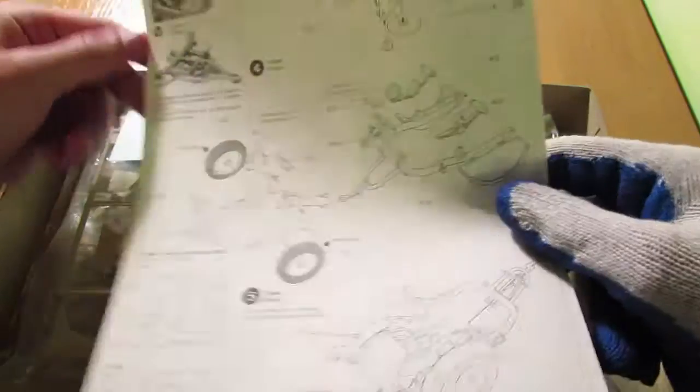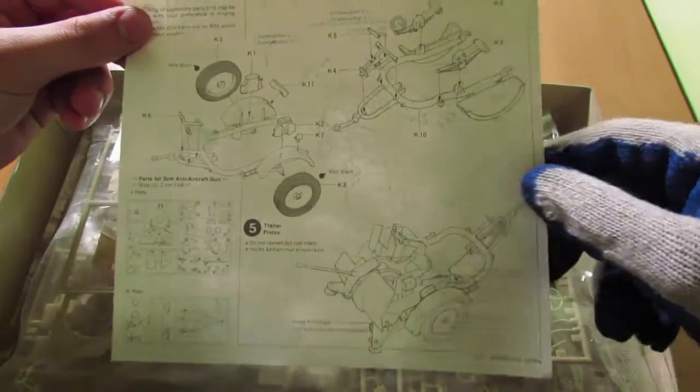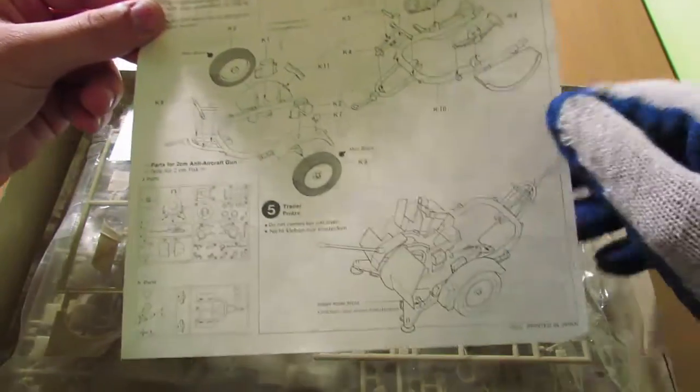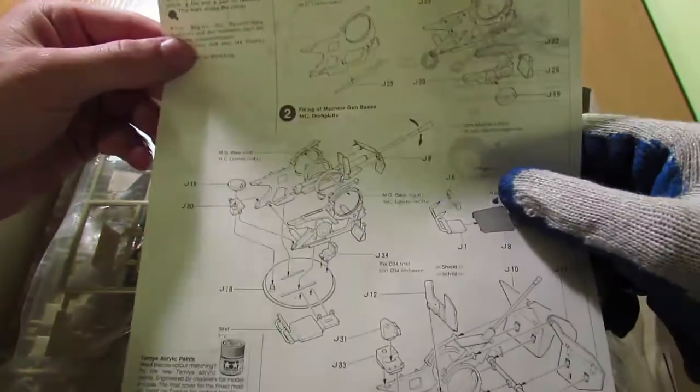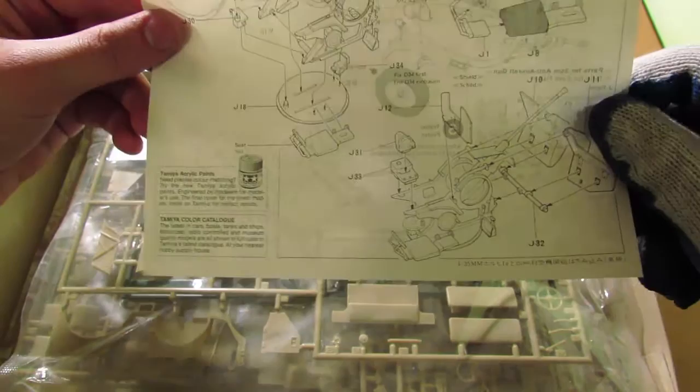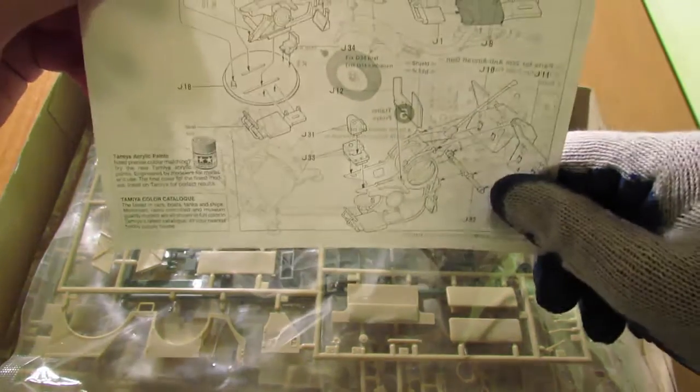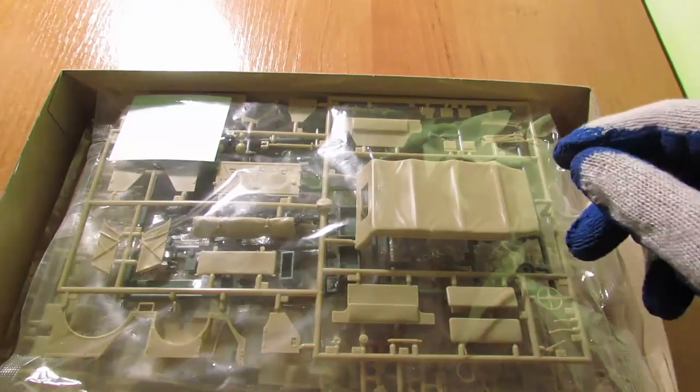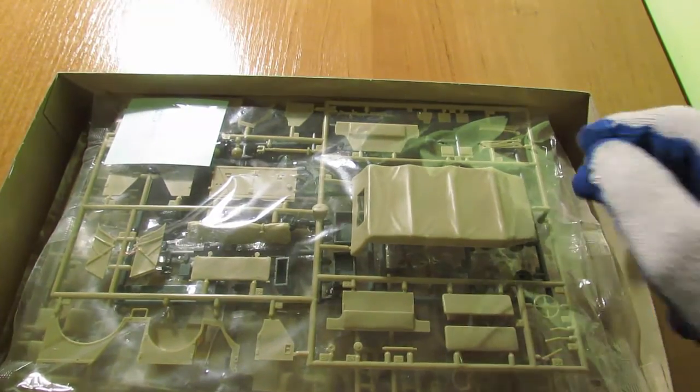Mam jeszcze jedną instrukcję. Jest to instrukcja do złożenia działka przeciwlotniczego z całym podwodziem, tym wozidełkiem. Proszę bardzo. Żebyście tu jakieś odpowiedzi mamy. Firma Tamiya swoje farby widzę, że rekomenduje. A teraz przejdźmy do samego zestawu co w środku się znajduje.